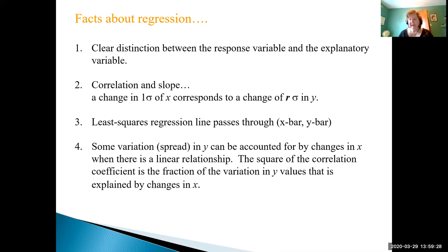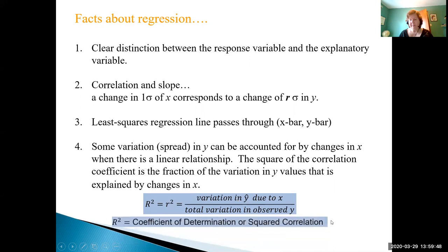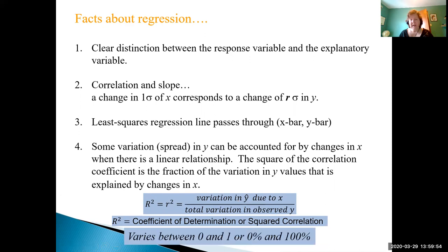Some variation can be accounted for changes in x when there is a linear relationship and how we get that is we square the correlation coefficient. And this is called the r squared value we saw that before. It's equal to little r squared and it's the variation in y hat due to x over our total variation in observed y. r squared is called the coefficient of determination or squared correlation. It also can vary between 0 and 1 or 0 percent and 100 percent.